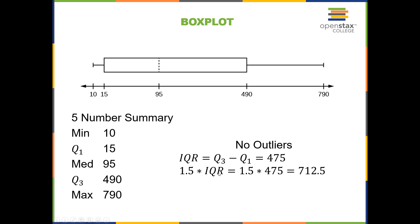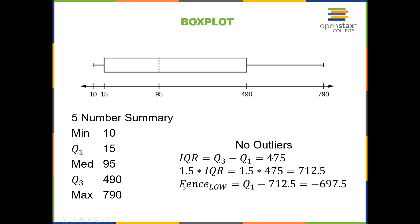We multiply the IQR by one and a half. This gives us a distance equal to the width of the inner box plus another half of that box. We use that distance to extend below the first quartile and above the third quartile to create a range of usual values; anything outside that range is an outlier. The edges of that range are called fences — the low fence is Q1 minus 1.5 times the IQR, and the high fence is Q3 plus 1.5 times the IQR.